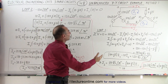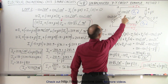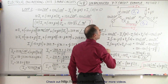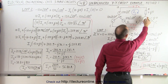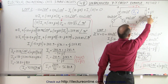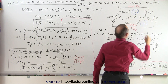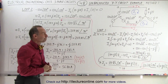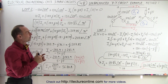First of all, recognize that we have a balanced source — 120 volts spread out at phase angles 120 degrees apart — but we do have an unbalanced Y load. We have a J5 on the A impedance, we have a minus J10, and we have a resistance on impedance B. So, how do we calculate those currents?